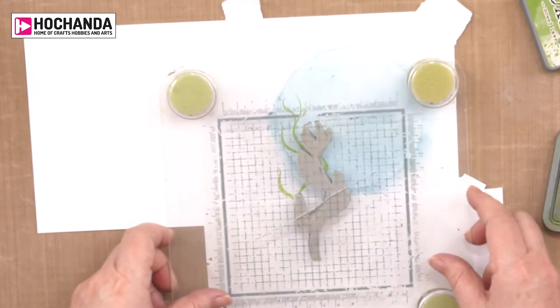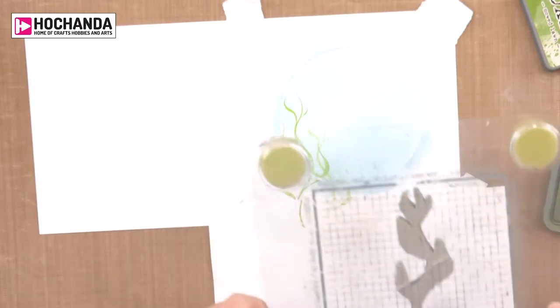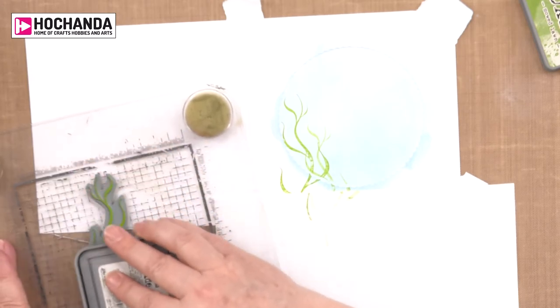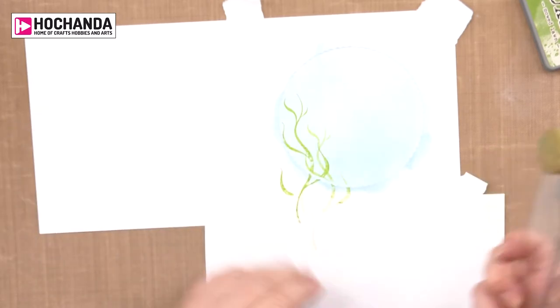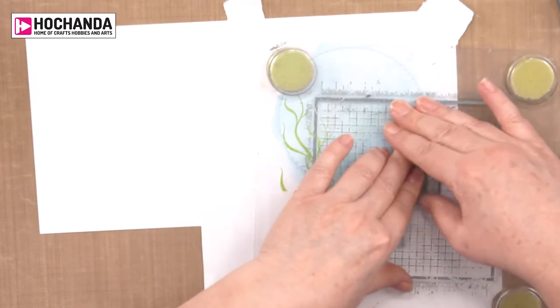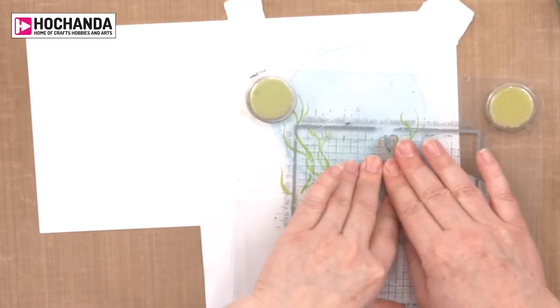Remember you can ink once, stamp twice. We've got nice overlapped seaweed. You can do it in several different greens as well. Let's have a little bit on this side. A little bit more.